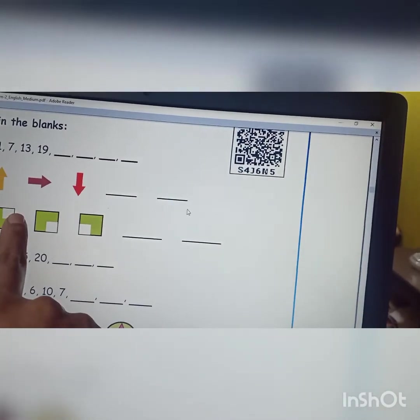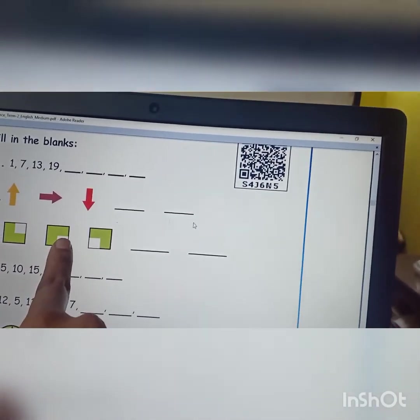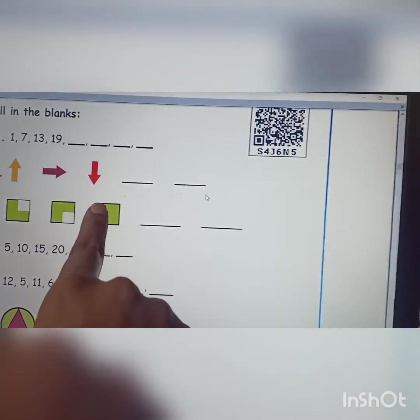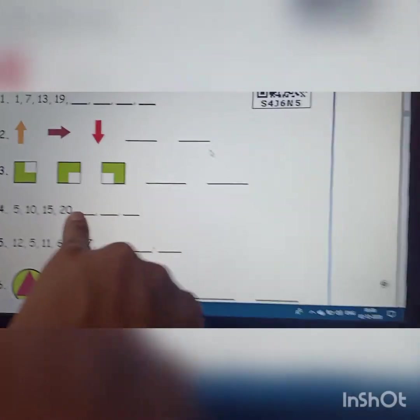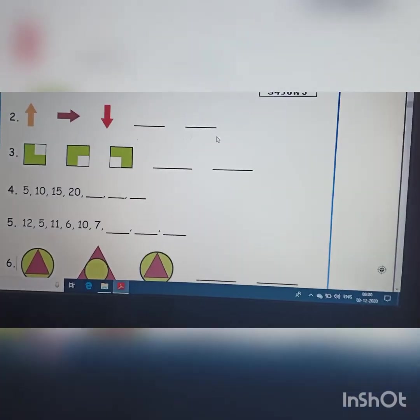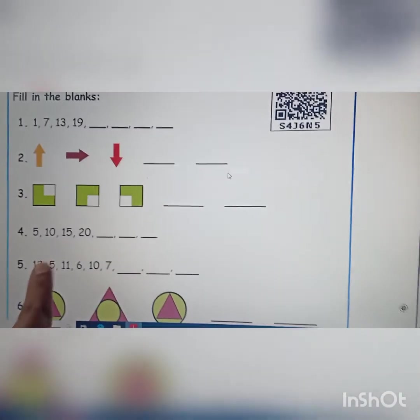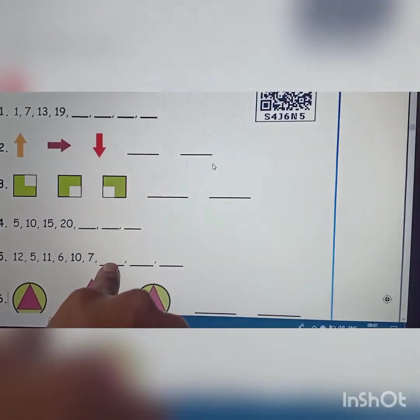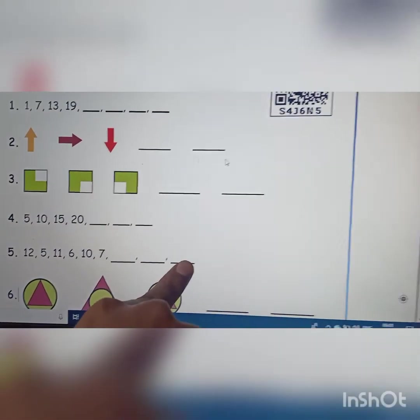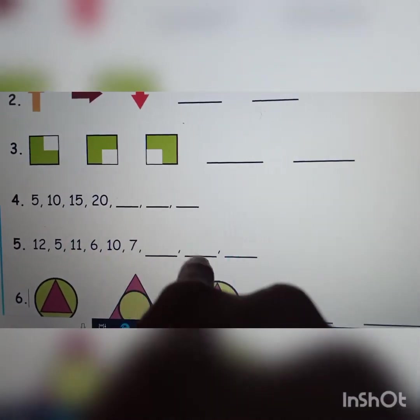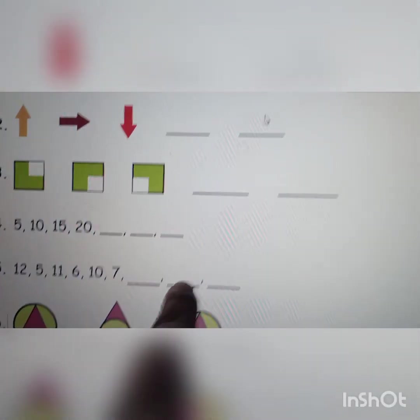Now there is a gap in the right corner and left corner and then you can draw the gap. Like that you should draw. Here is 5, 10, 15, 20, so next 25, 30, 35 like that you can draw. Here is 12, 11, 10, and here is 9 and 8. Again 5, 6, 7, 8 you should write here.